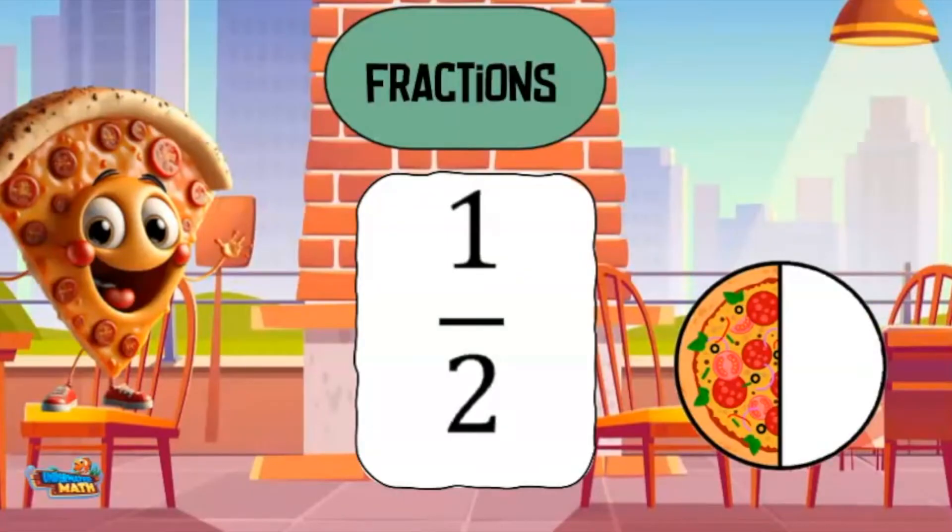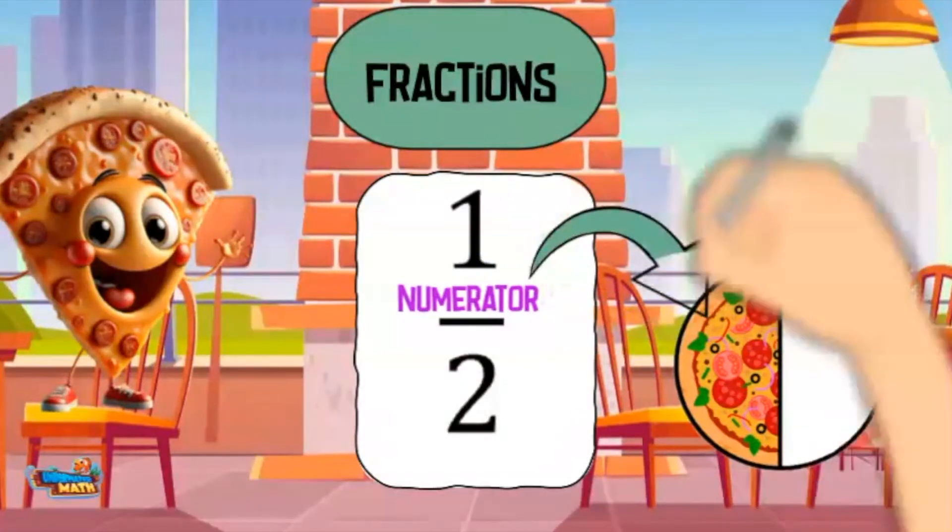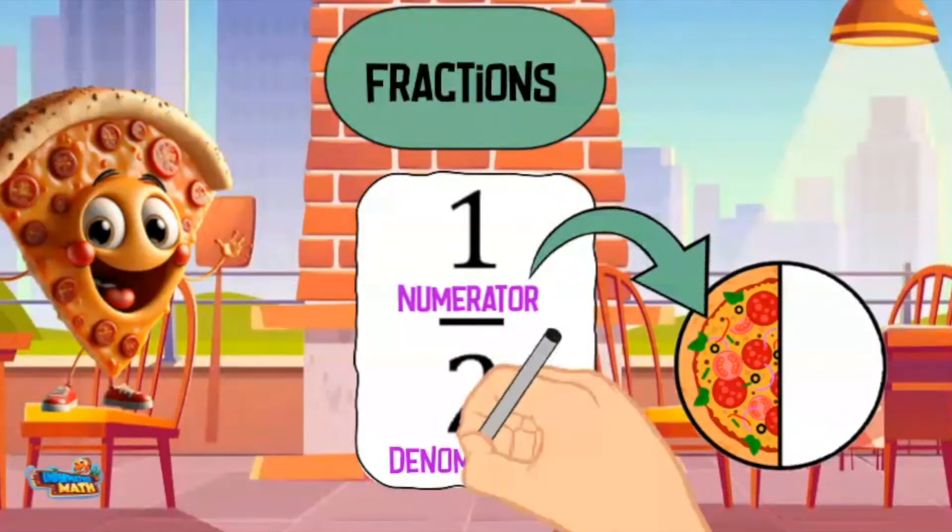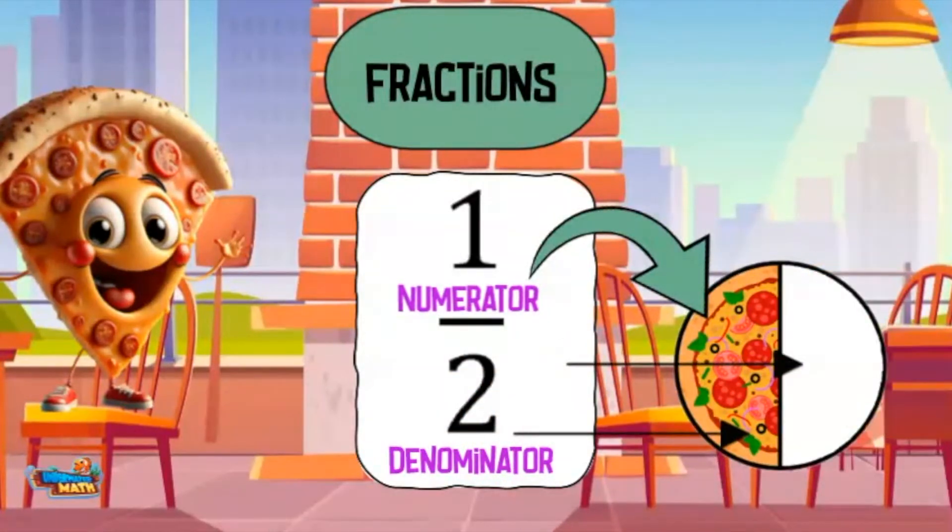A fraction looks like this. The top number of the fraction is called the numerator. This number represents a part of the whole being represented. The denominator is the bottom number and represents the number of equal parts it takes to make the whole.